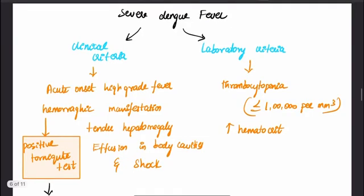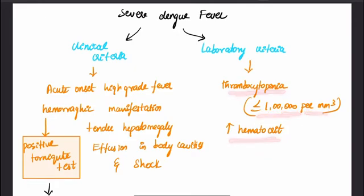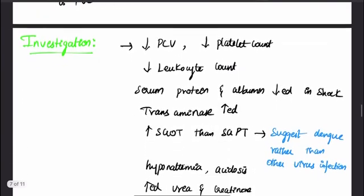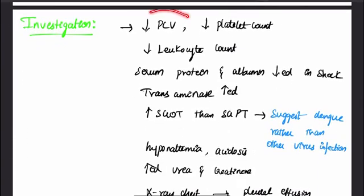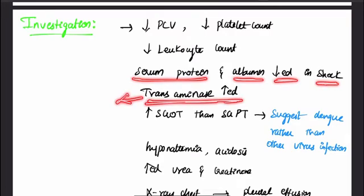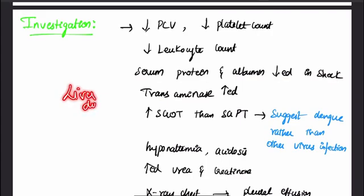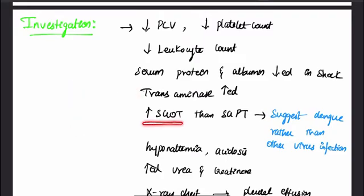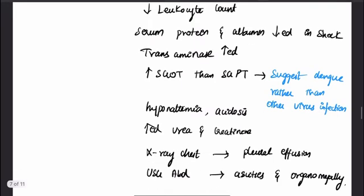The laboratory criteria for severe Dengue include thrombocytopenia — less than 1 lakh platelets per millimeter cube — and increased hematocrit (PCV). In investigations, there is decreased leukocyte count, decreased platelet count, and decreased serum protein and albumin in shock. Transaminases are elevated — including alanine transaminase (SGPT) and aspartate transaminase (SGOT). Notably, SGOT is increased more than SGPT, which suggests Dengue rather than other viral infections.